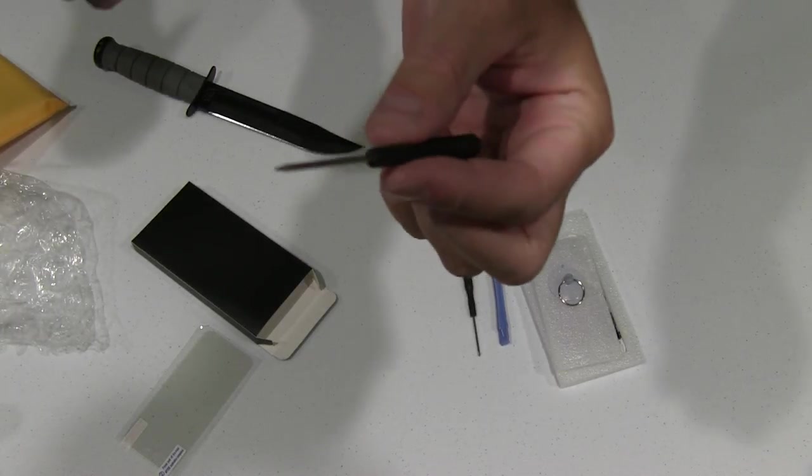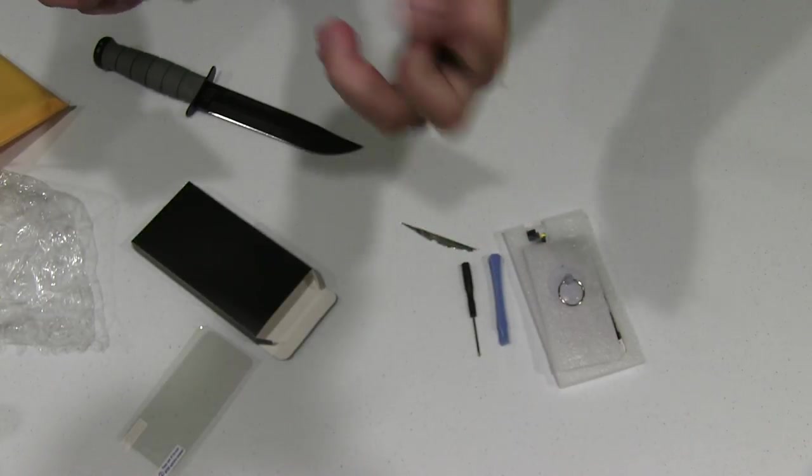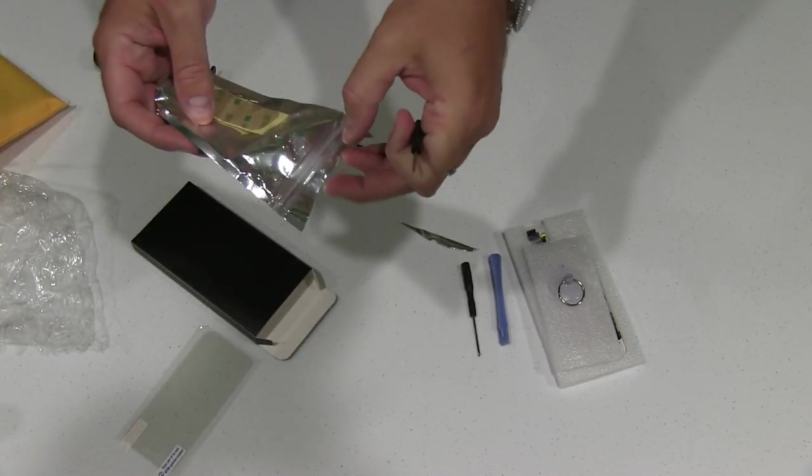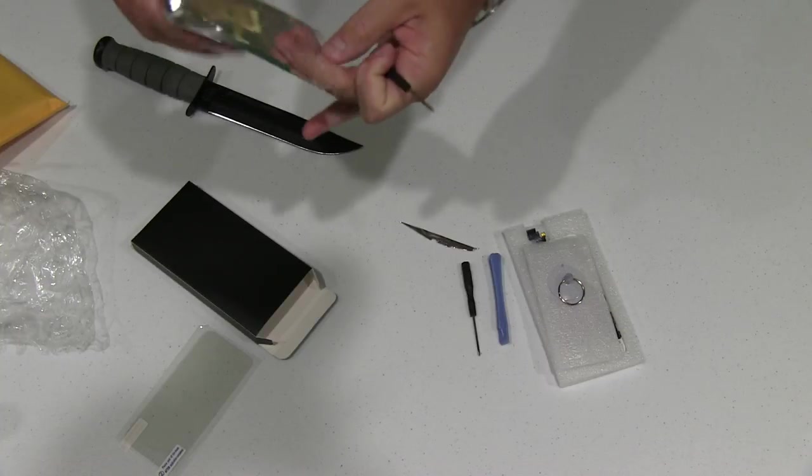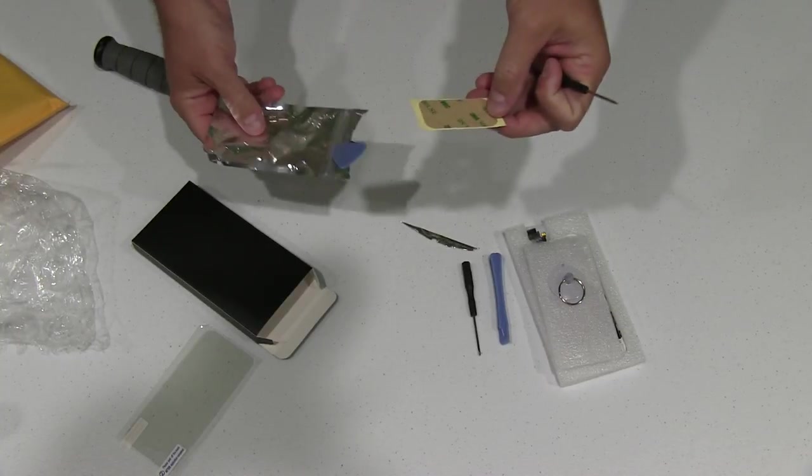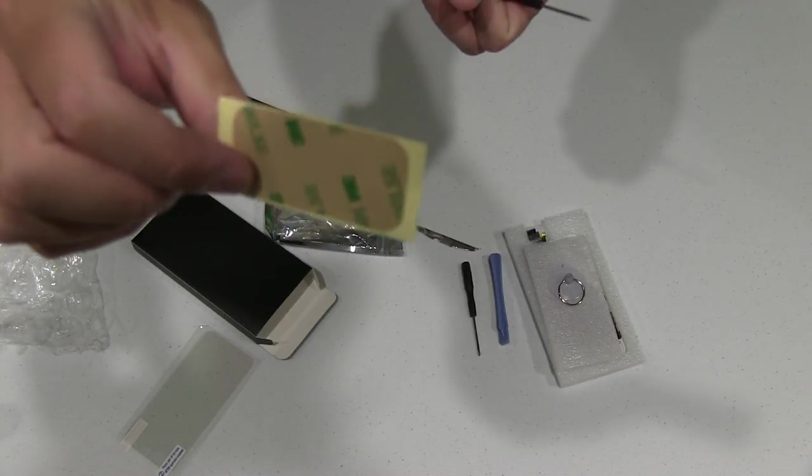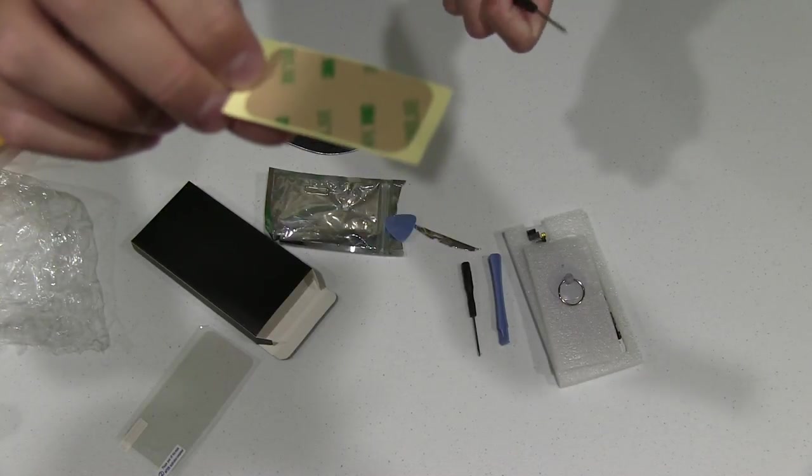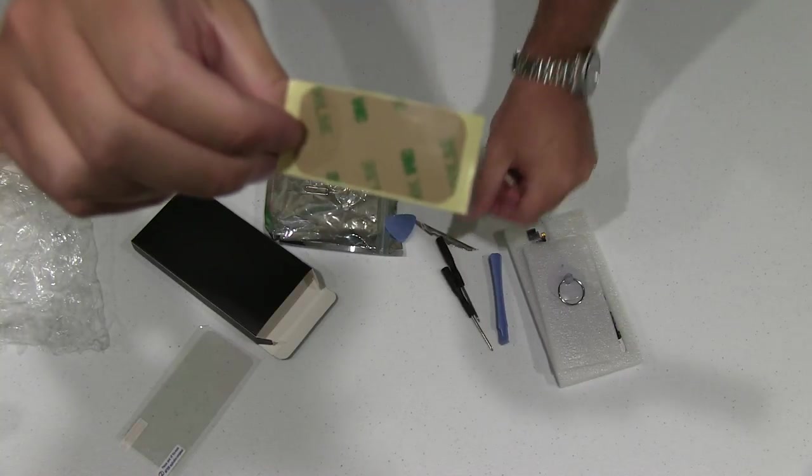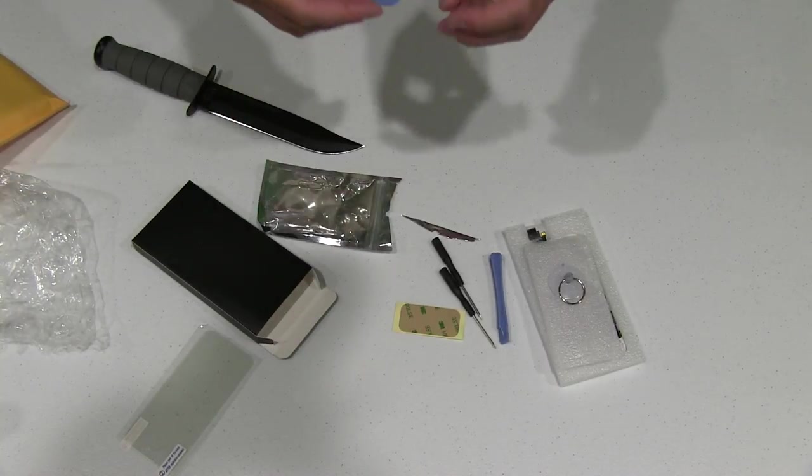You've got this other thing, it looks like it's kind of got a star tip on it. I bet that's to open the bottom of the phone. You've got a little sticky thing, 3M brand, which is nice, they seem to make quality stuff.